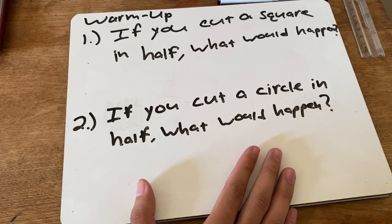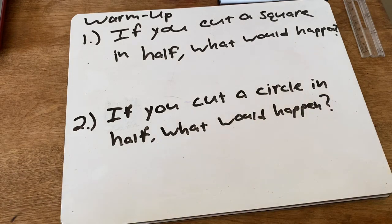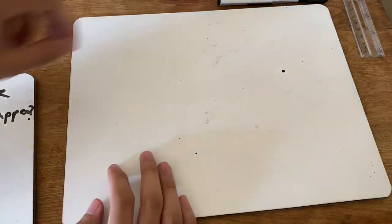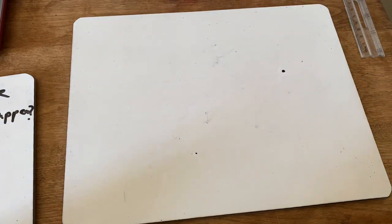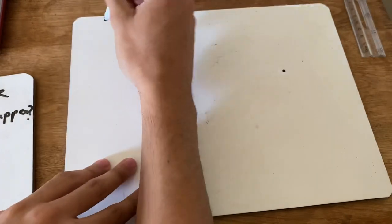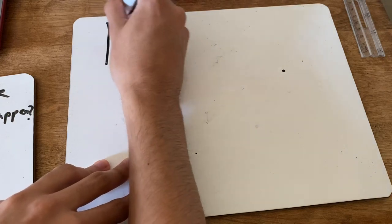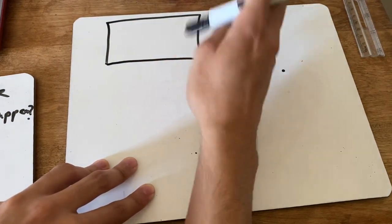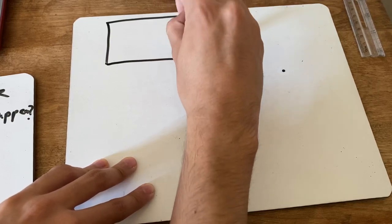Now go ahead and get started on your warm-up — pause the video. Number one says: if you cut a square in half, what would happen? This is a different type of question from what we've been doing, and I think it's very important that we actually draw it. So if I cut a square in half — let me make it more like a square.